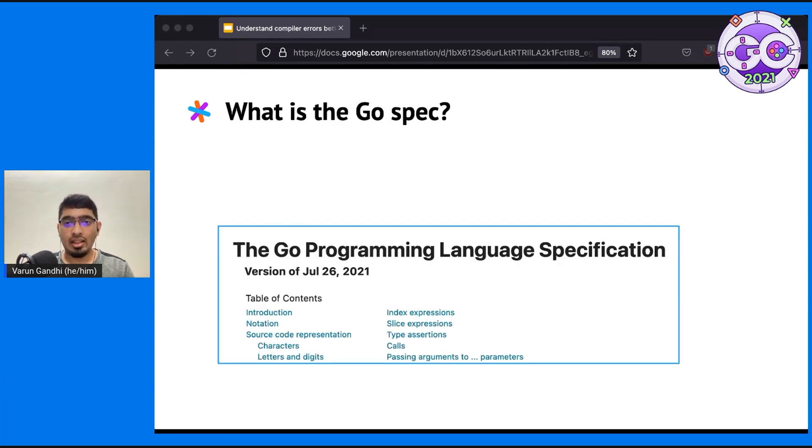So what is the Go spec? It is a document describing the syntax and semantics of Go code. Syntax covers things like keywords, punctuation, and so on. Semantics covers type checking and the runtime behavior of code.